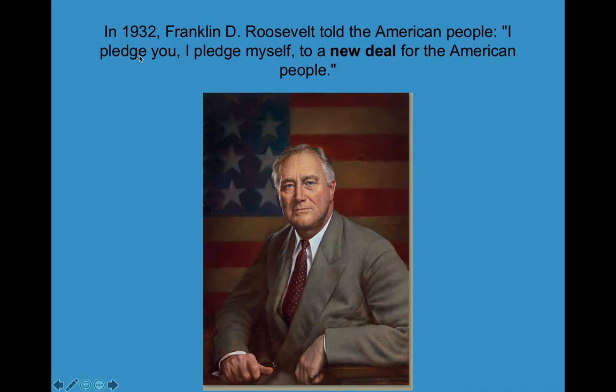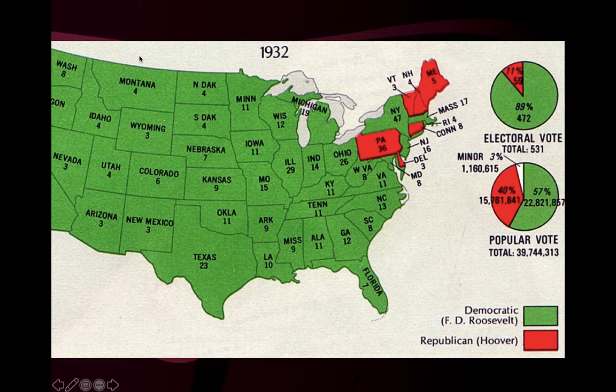President Herbert Hoover wasn't re-elected in 1932. FDR — Franklin Delano Roosevelt — was elected president. He told the people, 'I pledge to you, I pledge to myself, a New Deal for the American people.' You can see on the map how easily he won — green states represent states that FDR won versus red states that Hoover won.